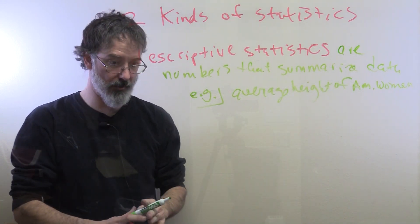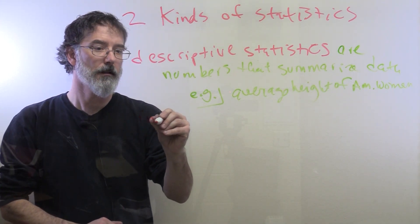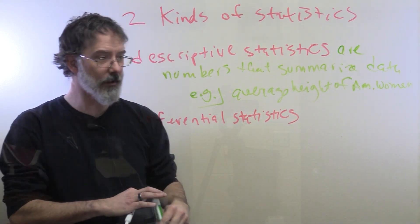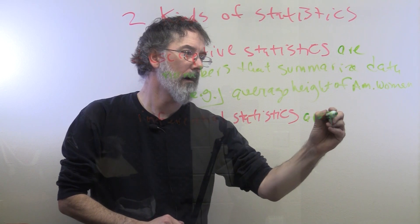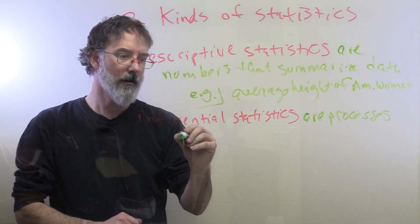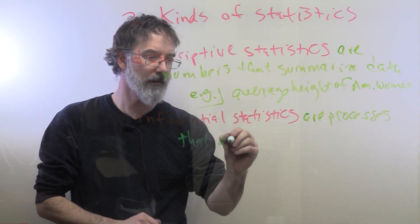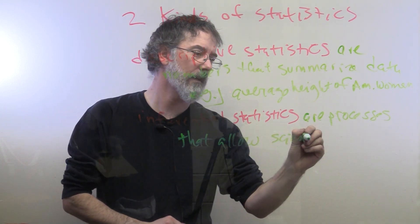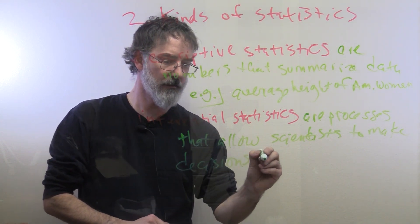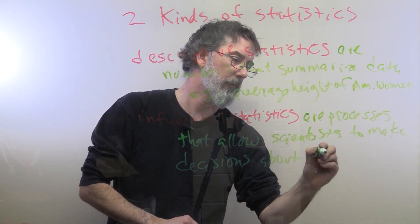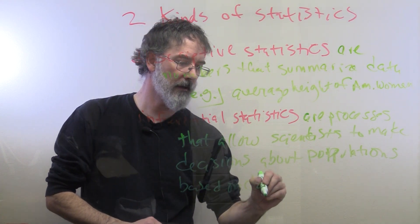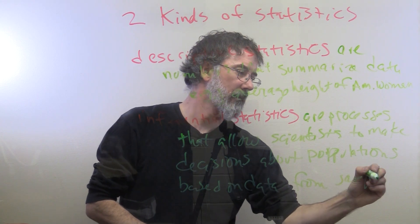and it summarizes the height of all American women. The other main kind of statistics is called inferential statistics. These are processes that allow, I don't know who to say, scientists? Most scientists to make decisions about populations,